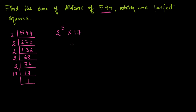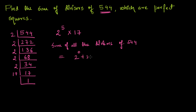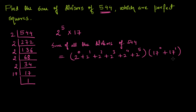So the prime factorization of 544 will be 2 to the power 5 times 17. Now if we want to find the sum of all the divisors of 544, this will be equal to (2⁰ + 2¹ + 2² + 2³ + 2⁴ + 2⁵) multiplied by (17⁰ + 17¹).